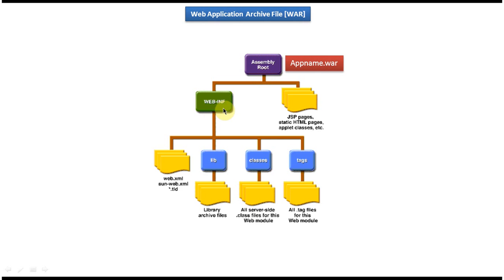Under the root directory there is another folder called WEB-INF. Under WEB-INF we can place web.xml and third-party deployment descriptors like sun-web.xml etc. The web.xml is the web application deployment descriptor and contains deployment information about the web application. Under WEB-INF, a lib folder will be there where you can put third-party JAR files like Hibernate JARs, servlet-related JARs, or web service-related JARs.